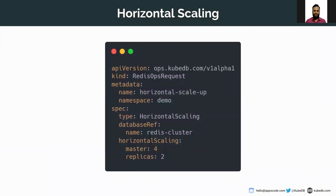The API version is ops.kubedb.com/v1alpha1, and the kind is RedisOpsRequest. In the metadata section, the name of the ops request is 'horizontal-scale-up' and the namespace is 'demo'. The namespace should be the same as the database. In the spec section, the type is HorizontalScaling.